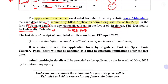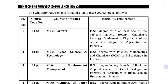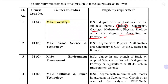The last date for receipt of completed application form is 19th April 2022. FRI is very strict — forms received after the last date will not be accepted under any circumstances. Regarding eligibility, for MSc Forestry, students need a BSc degree with at least one subject among Botany, Chemistry, Geology, Mathematics, Physics, or Zoology, or a BSc degree in Agriculture and Forestry — so Agriculture students have a great chance here. For MSc Wood Science and Technology, BSc with Physics, Mathematics and Chemistry (PCM) or BSc in Forestry is required.